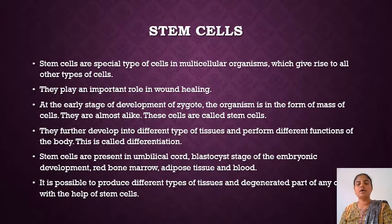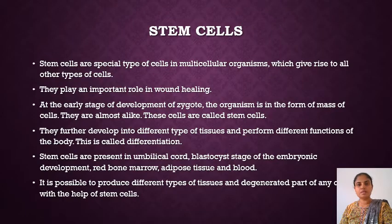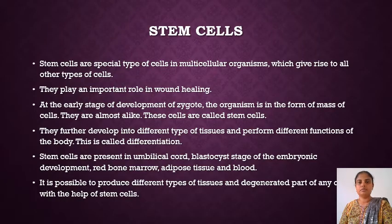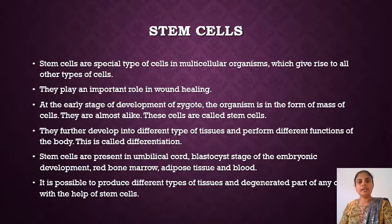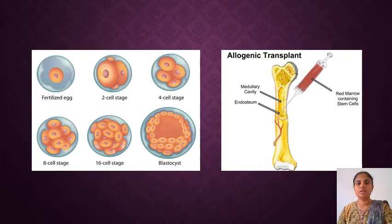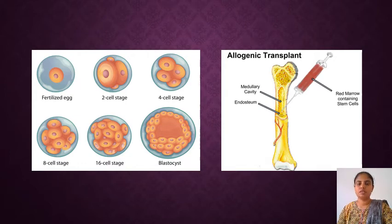Stem cells are present in the umbilical cord, which connects the fetus with the mother. Apart from the umbilical cord, stem cells are also present in red bone marrow, adipose connective tissue, and blood. Using these stem cells, it is possible to develop any particular type of cell and hence a particular organ. During embryo development, stem cells are present at the blastocyst stage, as shown in figure 1, along with a figure showing stem cell extraction from red bone marrow.